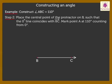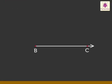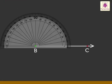Step 2: Place the central point of the protractor on B such that the zero degrees line coincides with ray BC. Mark point A at 110 degrees counting from zero degrees.